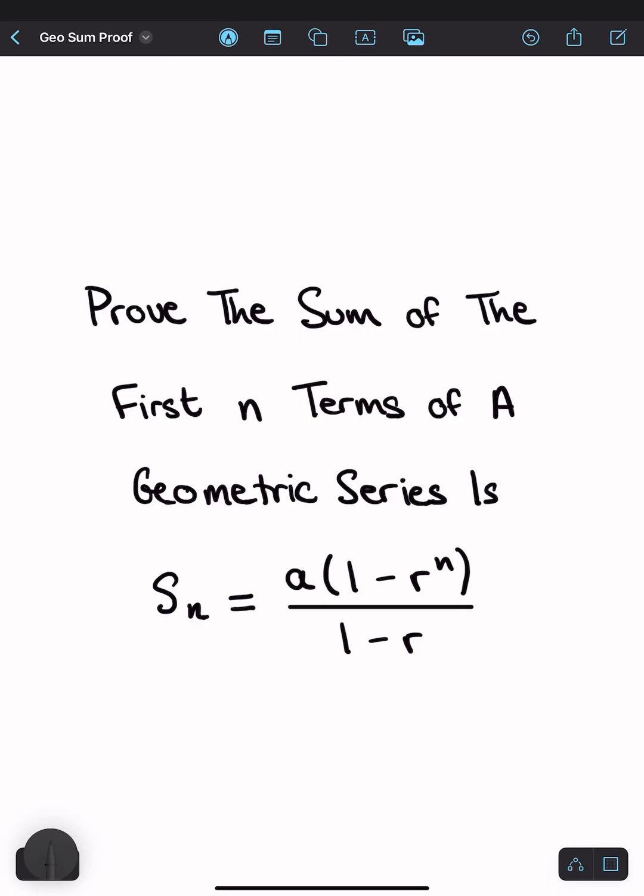Here's a proof you should know for your A level math exam. Prove the sum of the first n terms of a geometric series is a times 1 minus r to the n all over 1 minus r.